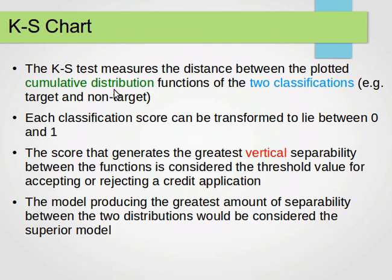The KS measures the distance between the plotted cumulative distribution functions of the two classifications — good or bad, target or non-target, yes or no, positive or negative. We compute the cumulative distributions, plot them both, and find the distance between them. Each classification score can be transformed to lie between 0 and 1, depending on the application and convenience.